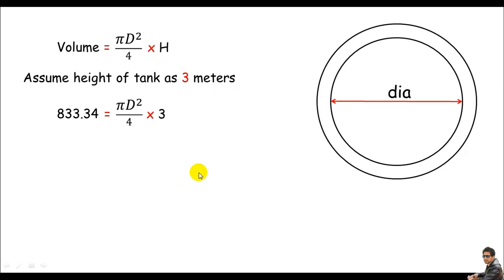If you do some short maths like 3 times pi divided by 4, this is of course 2.356 D². Just dividing both sides by 2.356, we can get of course D² equals 353.68.